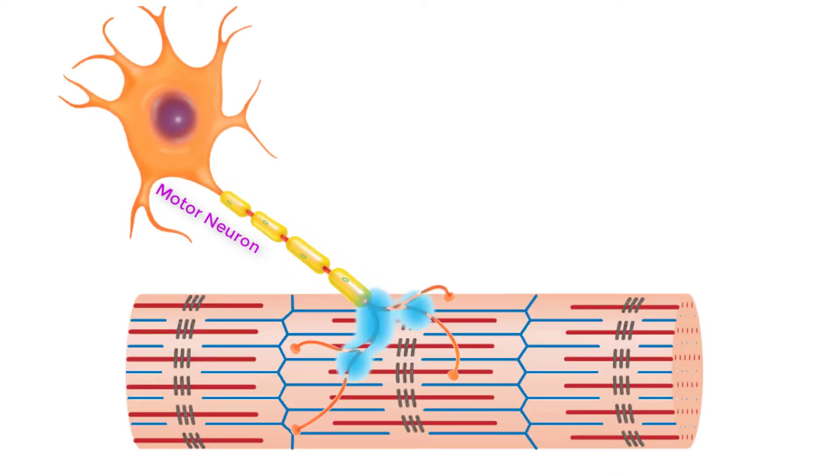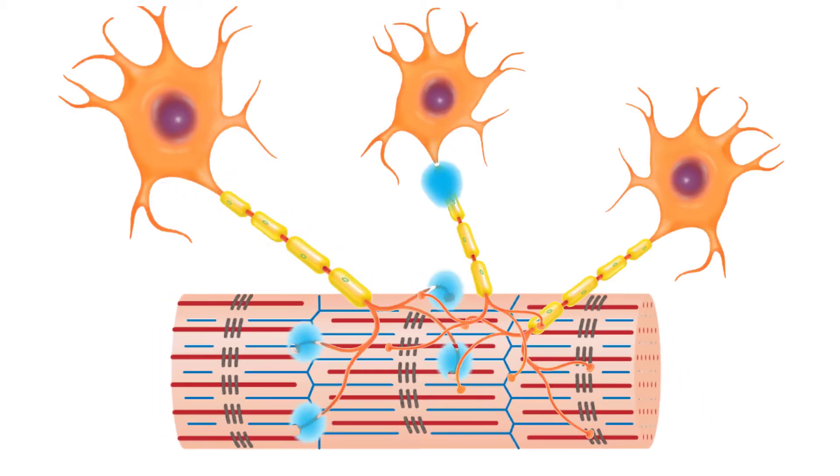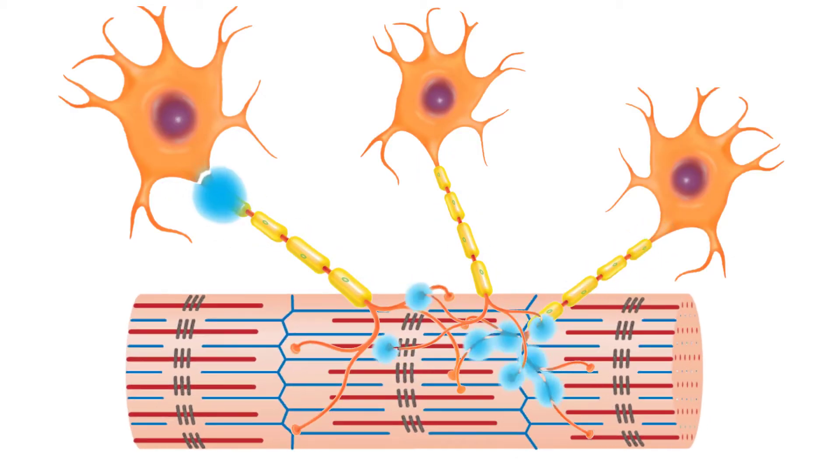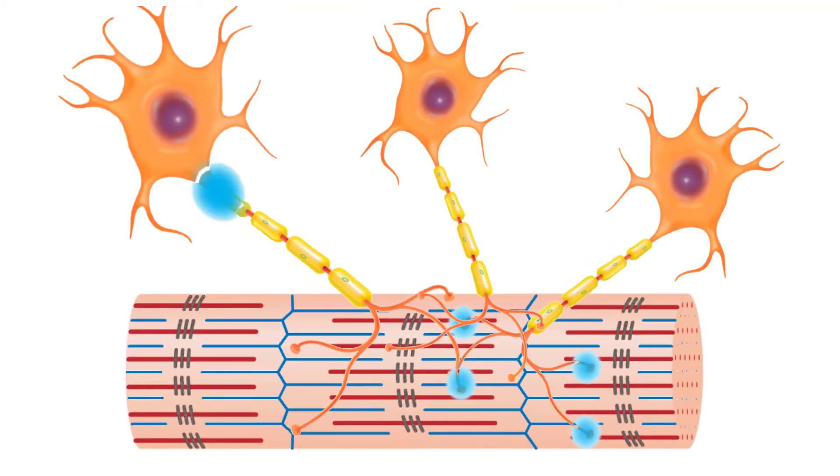The frequency of action potentials or nerve impulses from a motor neuron, as well as the number of motor neurons transmitting action potentials, both affect the tension produced in skeletal muscle.